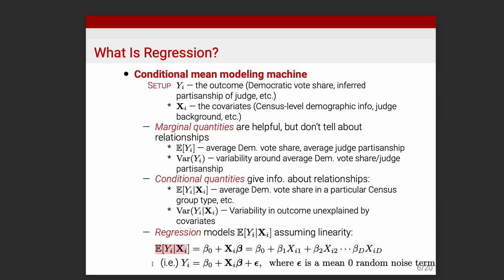At every value of x you have a distribution of y. You can think about a regression as taking these data points and applying a three-dimensional volume proportional to the density over all these data points. What we're trying to estimate is the conditional mean of all these different distributions as we slice along data — the expectation across all the different values of x.